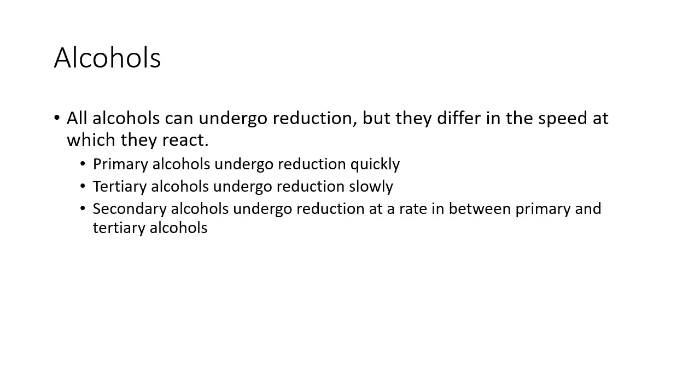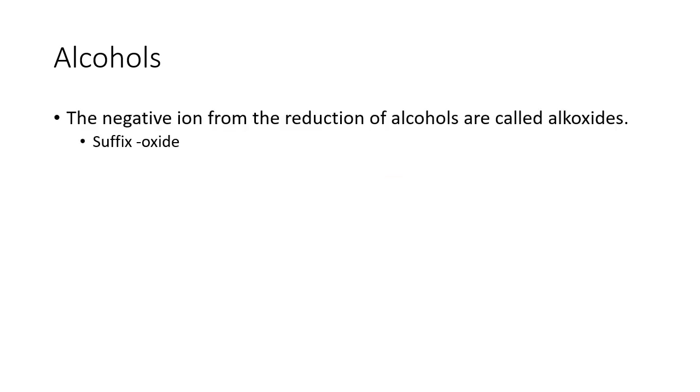So all alcohols can undergo reduction, but they differ in the speed at which they react. Primary alcohols undergo the reduction quickly, so you'll make lots of bubbles of hydrogen gas very fast, tertiary alcohols very slowly, and secondary alcohols are somewhere in between. The negative ions from reduction of alcohols are called alkoxides, and their suffix is -oxide.